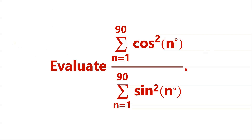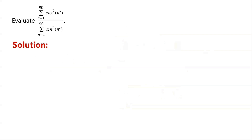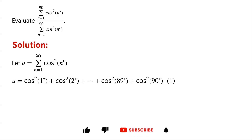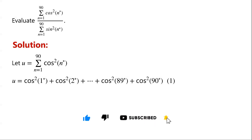Evaluate this trigonometric expression. The numerator is the sum of cosine squared from 1 degree to 90 degrees. The denominator is the sum of sine squared from 1 degree to 90 degrees. We let u equal sigma from n equals 1 to 90 of cosine squared of n degrees. So u equals cosine squared of 1 degree, plus cosine squared of 2 degrees, plus so on, plus cosine squared of 89 degrees, plus cosine squared of 90 degrees. We label this as expression 1.